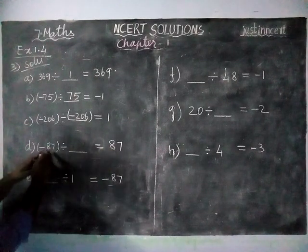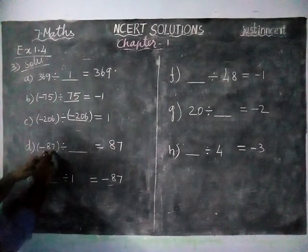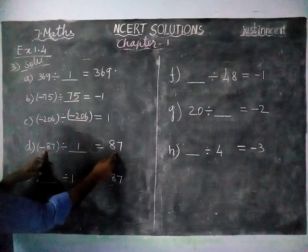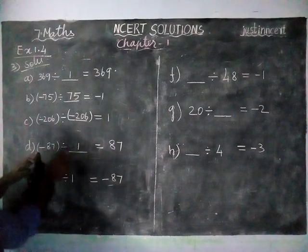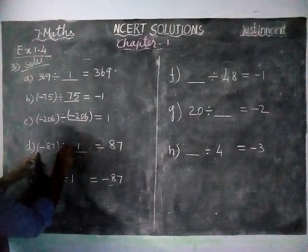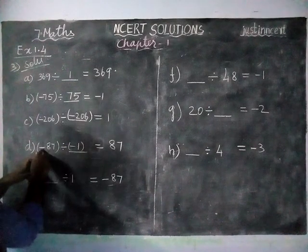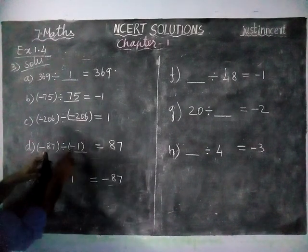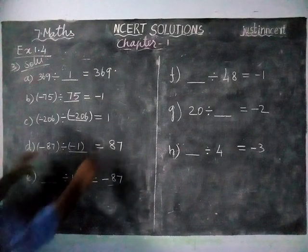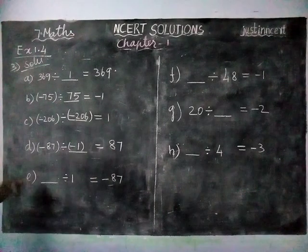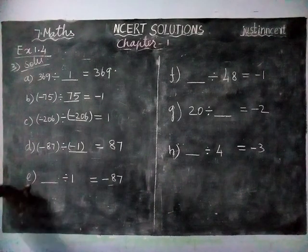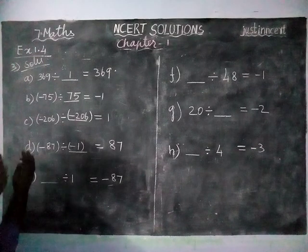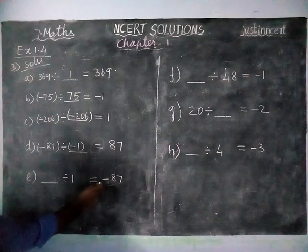The number is 87. When we are dividing we will get 87, and here one number is minus so this number is also minus. Minus divided by minus is equal to plus, so 87 divided by 1 is equal to 87. Next option e: the same concept — when you divide a number by 1 you get the same number.